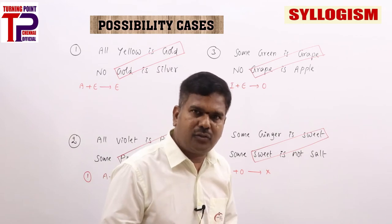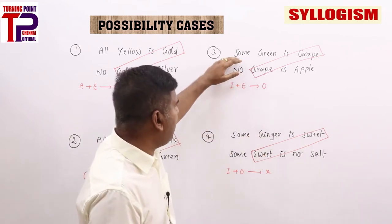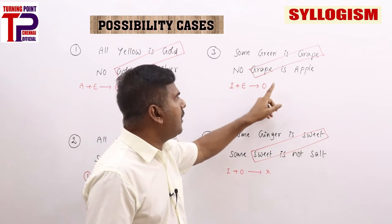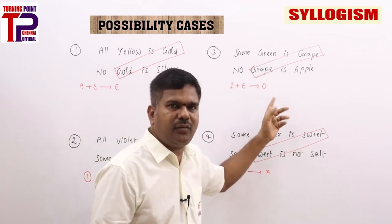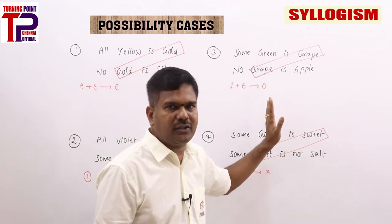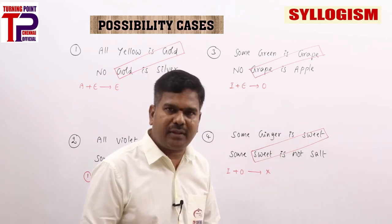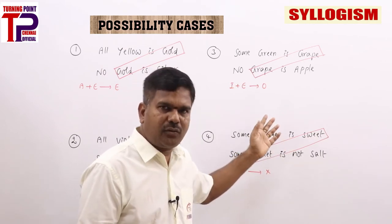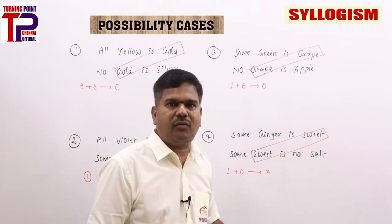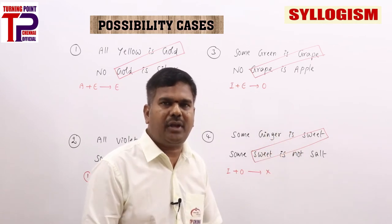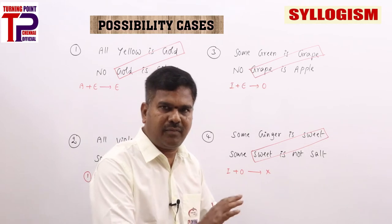So which ones do we consider for possibility cases? Individually we consider each statement's possibilities. Based on six rules, whatever answer you get — for that we consider possibilities. Other than that, for immediate inferences we should not consider possibility cases. From the six-rule result you can take possibilities; from derived immediate inferences, strictly no.